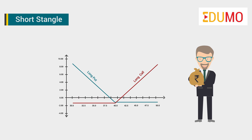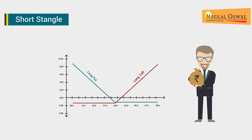If the trader identifies a specific range in which the stock is expected to trade and no major events are around the corner, short strangle is a perfect strategy to execute.